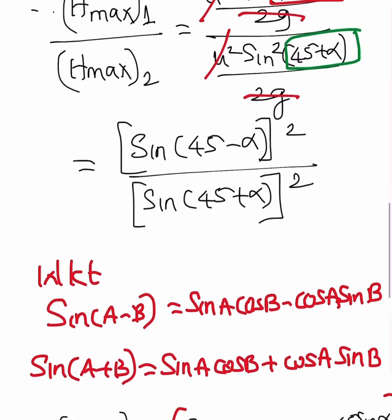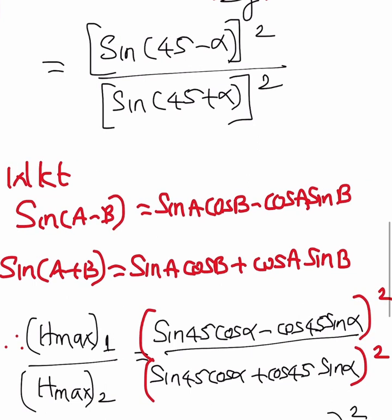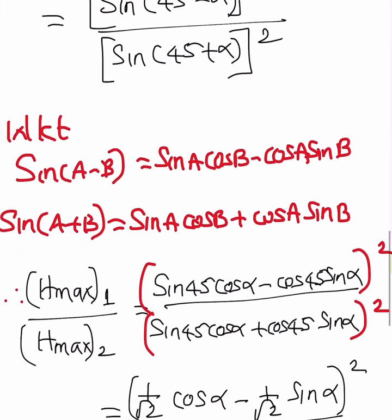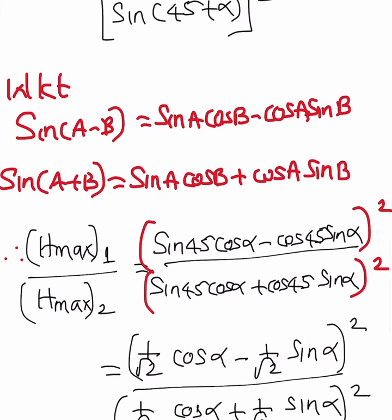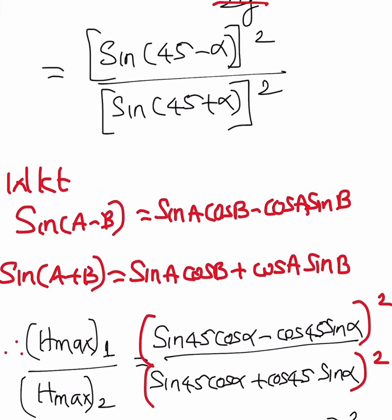From trigonometry, sine A minus B is equal to sine A cos B minus cos A sine B. Similarly, sine A plus B is equal to sine A cos B plus cos A sine B. In place of A you substitute 45, in place of B you substitute alpha.